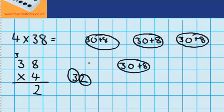Just remember as you're writing that little 3 up here, that it actually represents 3 tens because we're in the tens column. The next thing I need to do is work out what 4 groups of 30 would be — so I did my 4 times 8, and now I'm doing my 4 groups of 3 tens, which is 12 tens. I just need to add the other tens I carried: 12 tens plus 3 tens is 15 tens, and you can see that is the same as 150 plus that 2, so it's 152.